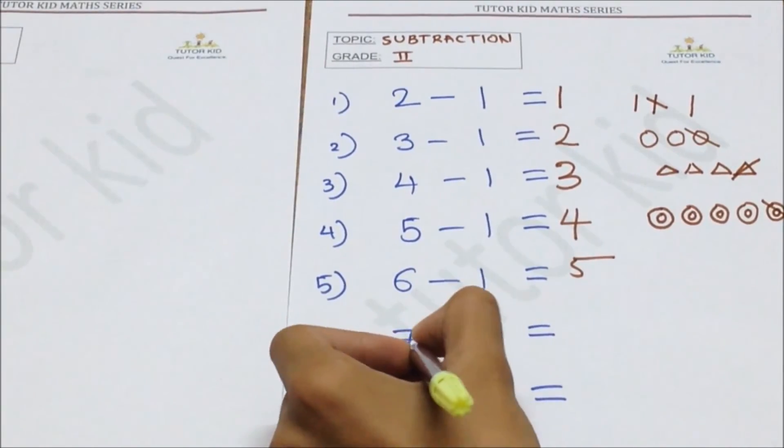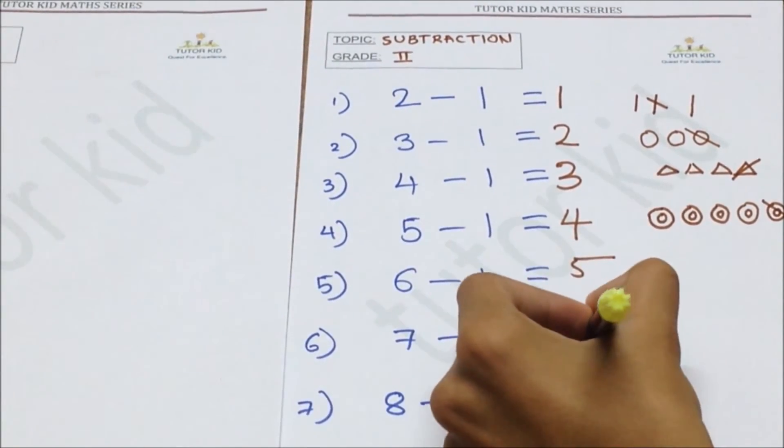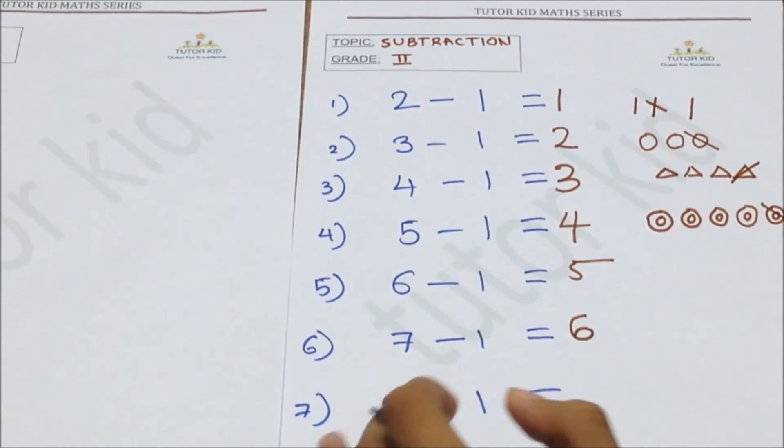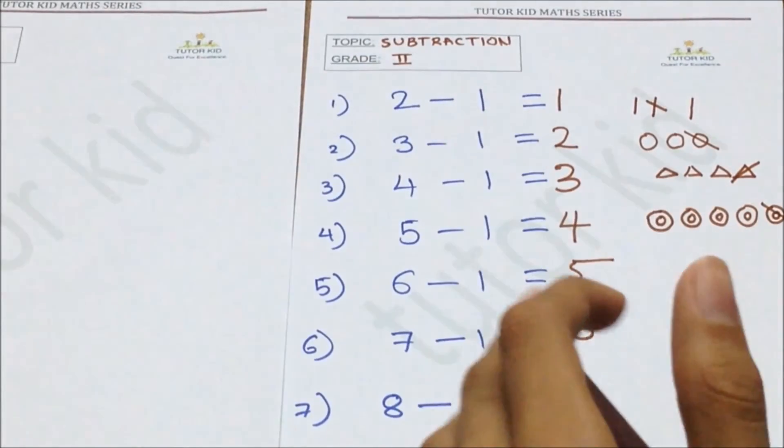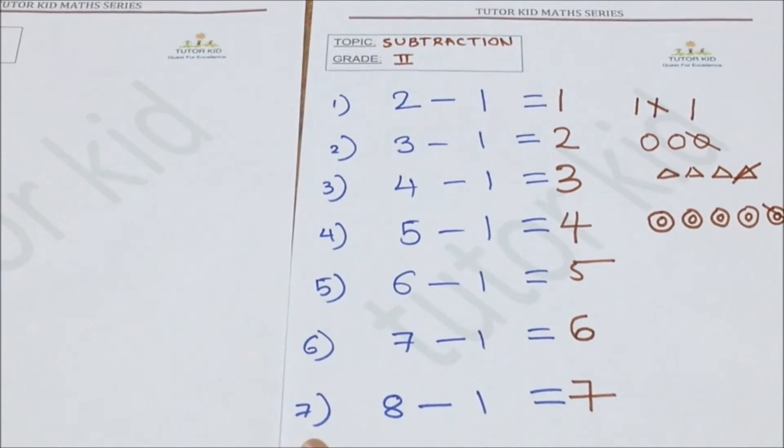Like this, seven minus one is six. For eight, if you take from it minus one we will get answer is seven. And last, nine minus one.